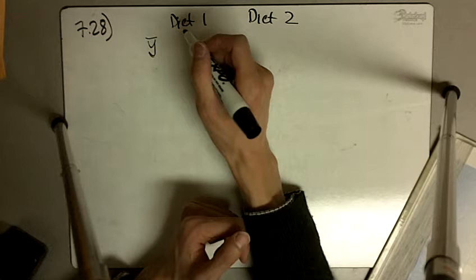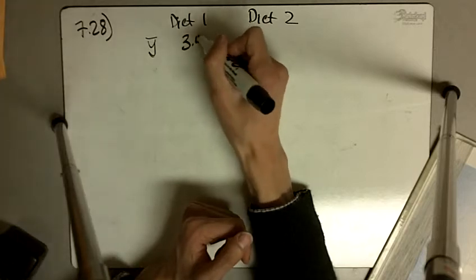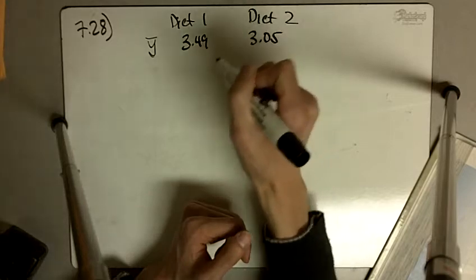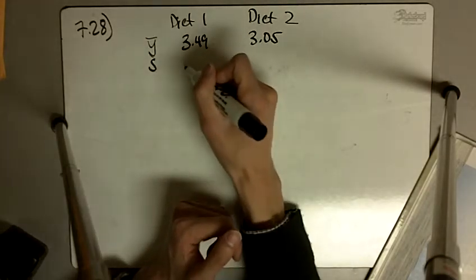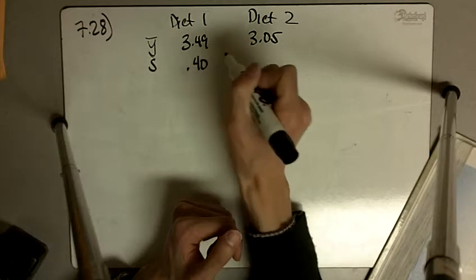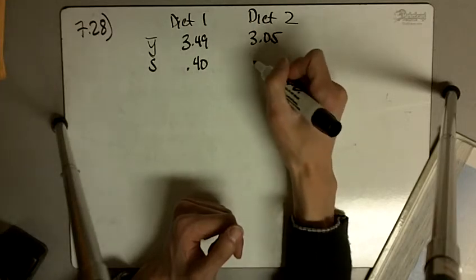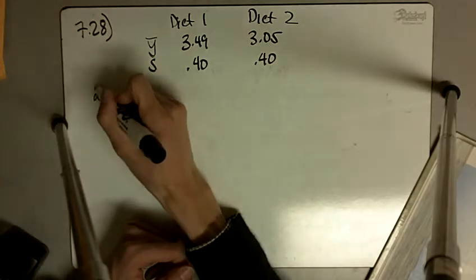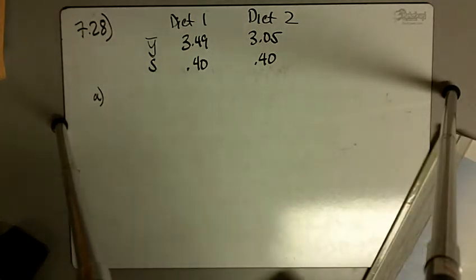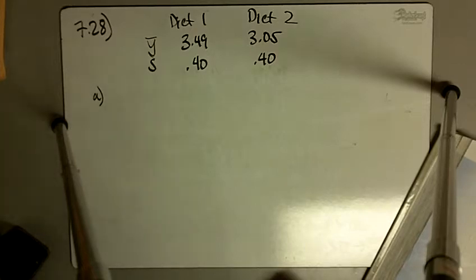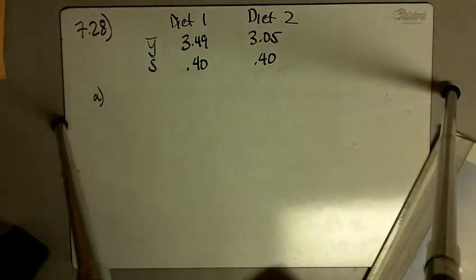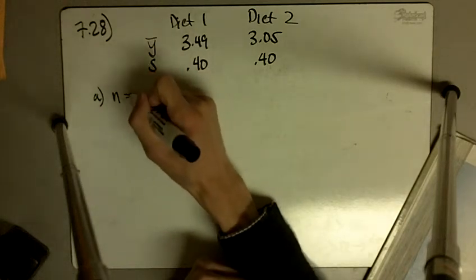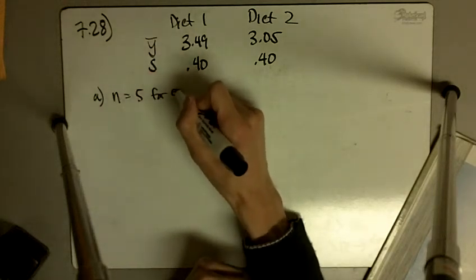So our y-bar of diet 1, that turned out to be 3.49. And here it's diet 2, 3.05. Our standard deviation of sample 1 is 0.4, and our standard deviation of sample 2 is 0.4 also. Part A says, using the t-test to compare the diets, bracket the p-value assuming the number of pigs on each diet was, so we're going to say n is equal to 5 for each group.